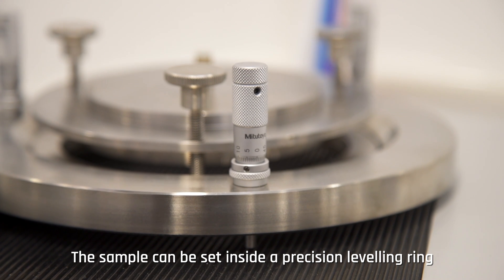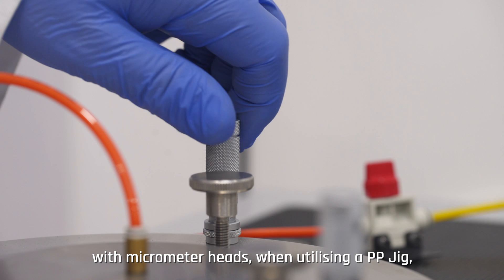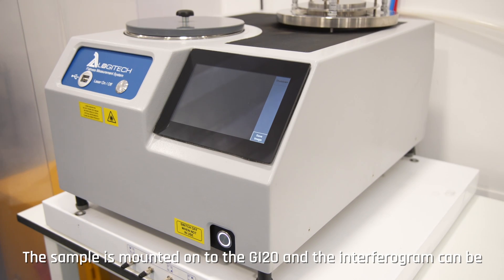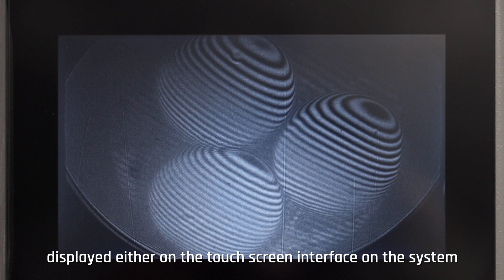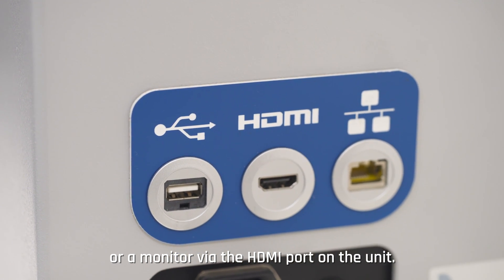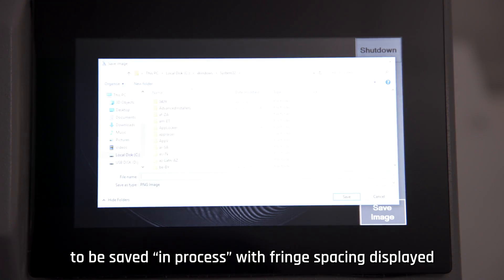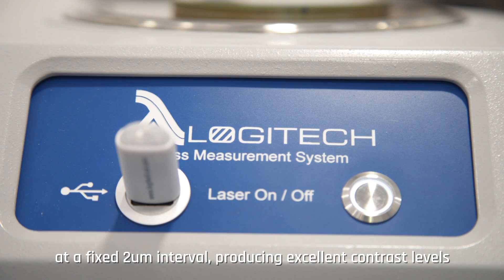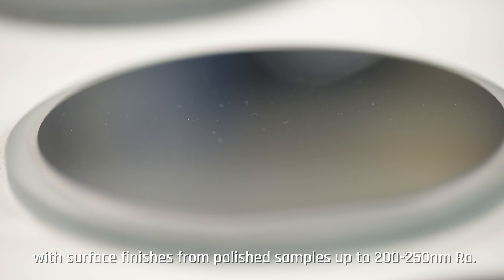The sample can be set inside a precision leveling ring with micrometer heads when utilizing a PP jig to allow adjustment to the angle. The sample is mounted onto the GI 20 and the interferogram can be displayed either on the touch screen interface on the system or a monitor via the HDMI port on the unit. The touch screen interface allows rapid and accurate measurements to be saved in process, with fringe spacing displayed at a fixed 2 micrometer interval, producing excellent contrast levels with surface finishes from polished samples up to 200 to 250 Ra.